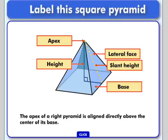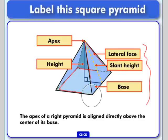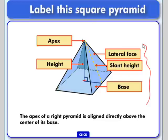These terms are going to be very important when calculating the surface area of a pyramid, specifically these three. We already know what the base is and we've talked a little bit about lateral faces. What's going to be really important in calculating the surface area of a pyramid is its slant height. The slant height is used when determining the area of a lateral face.